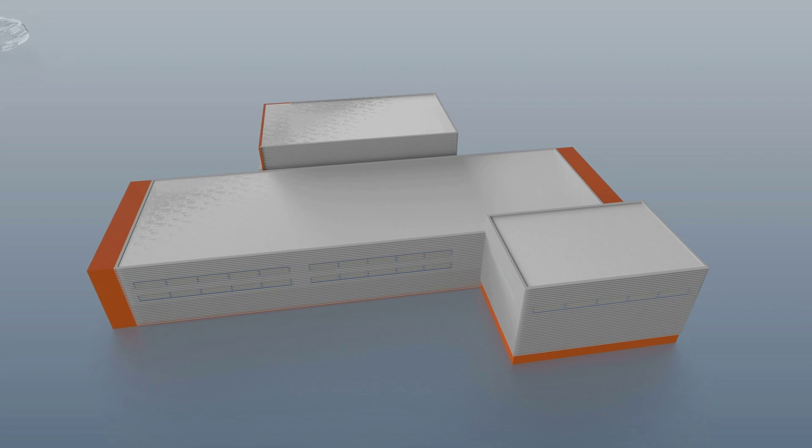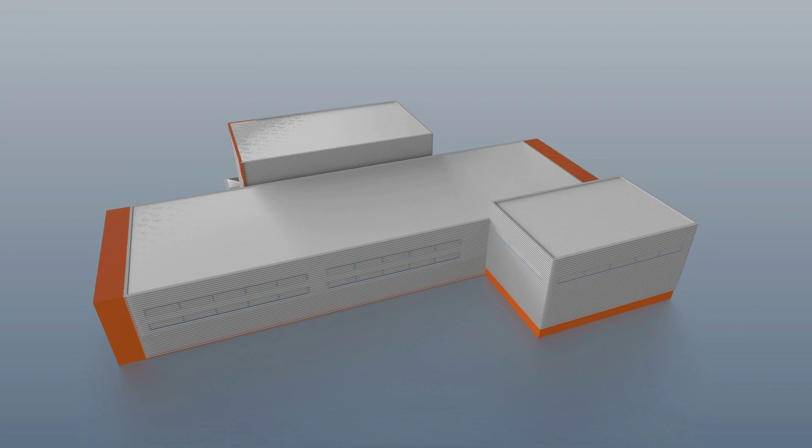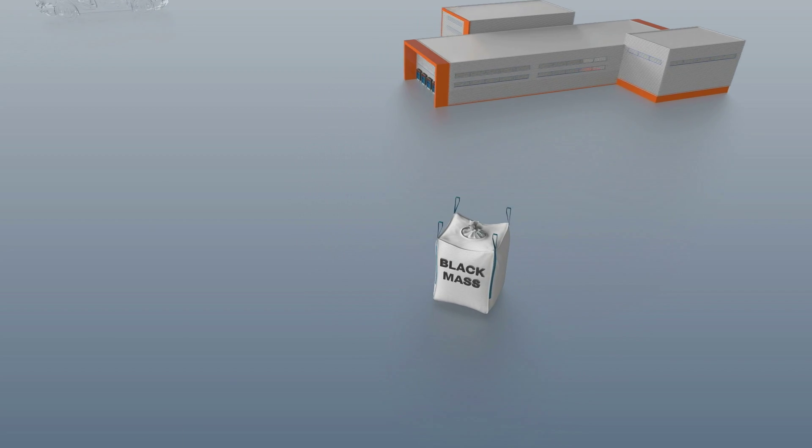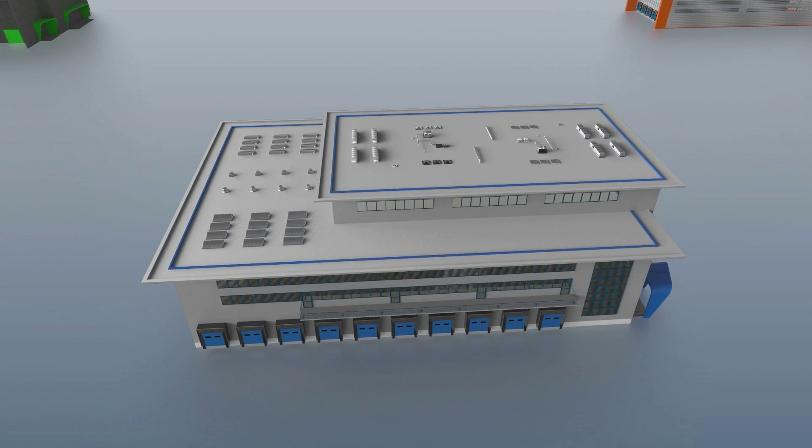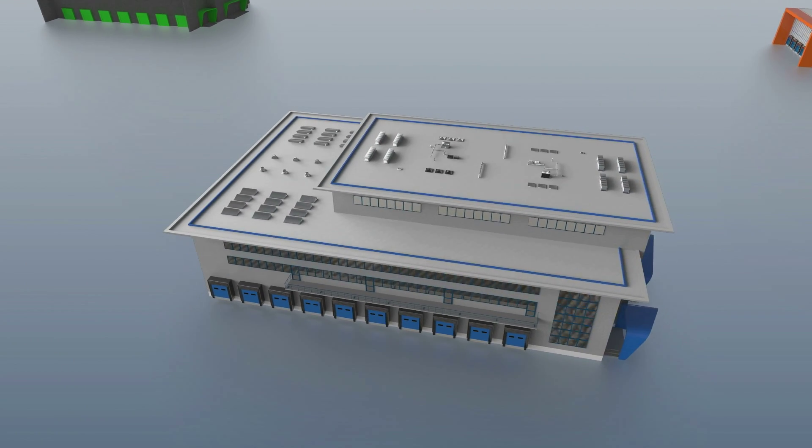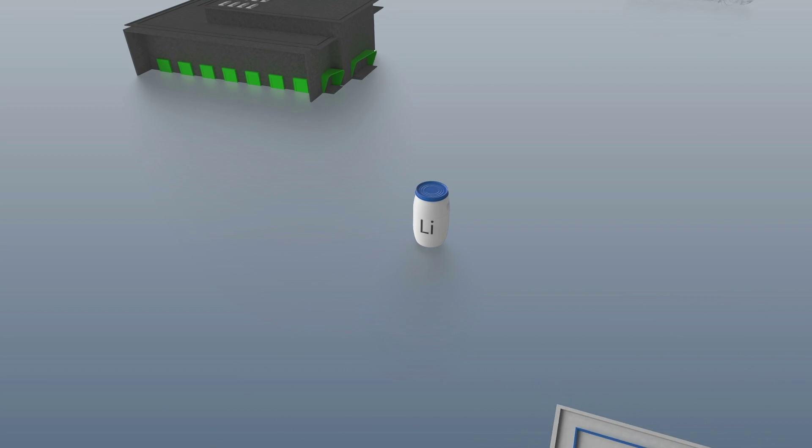At the recycling plant, the material is separated into its individual parts. Then the black mass is processed by companies who are specialized in this. Among other things, lithium carbonate is produced as part of the process.